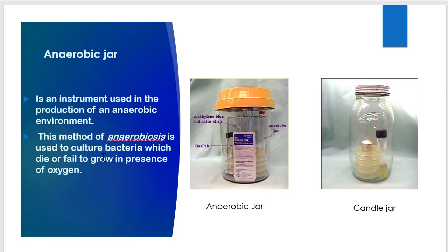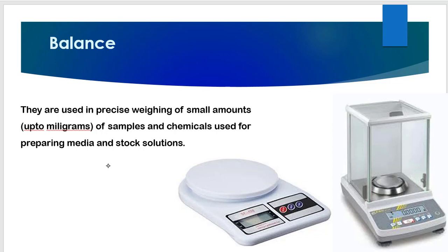Next we have anaerobic jars. These are used in the microbiology lab to culture anaerobic bacteria — bacteria that don't like oxygen and cannot grow in its presence. We use these anaerobic jars to grow such microorganisms. We also have the electronic balance, which has the capacity to weigh as low as 1 mg. They are used for precise weighing of small amounts, up to milligrams, of samples and chemicals used for preparing media and stock solutions.